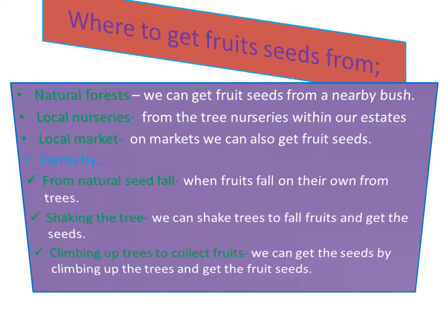From a natural seed fall — you can visit a farm where there are fruit trees and on the ground you will be able to get seeds that have fallen on their own. They got tired of holding themselves on the tree branches, fell down to the ground, and you can collect those seeds and go home to grow them on your farm.